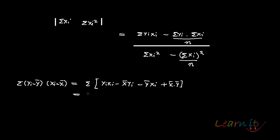Putting the summation sign, what you get is summation of yi·xi. Since x bar is constant, it comes out of the summation sign: x bar·summation(yi) minus y bar into summation(xi). y bar being constant also comes out of the summation sign, and x bar·y bar are both constant added n times, so it becomes n into x bar·y bar.